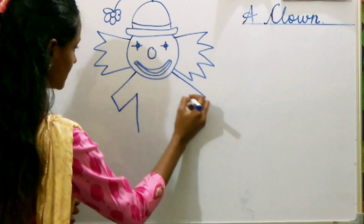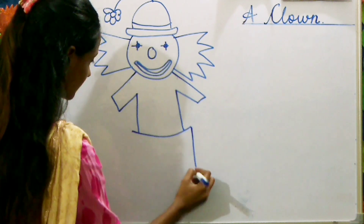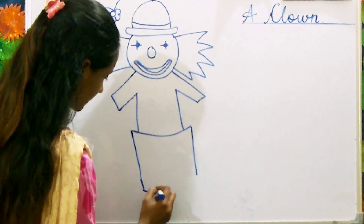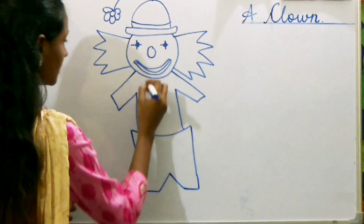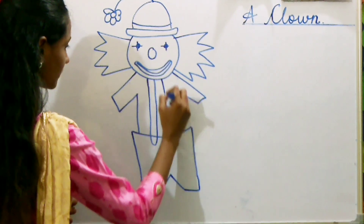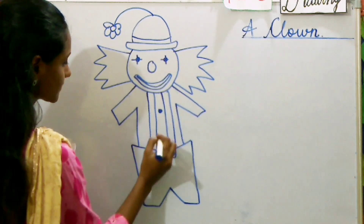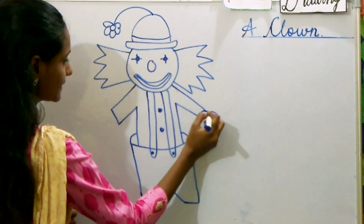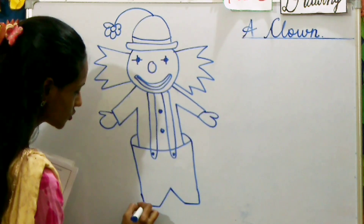These are the hands. We will make the strap and the buttons. Now the hand and the shoes.